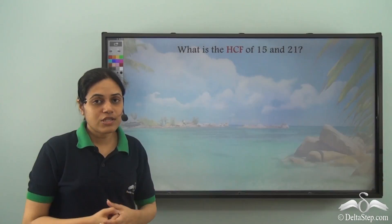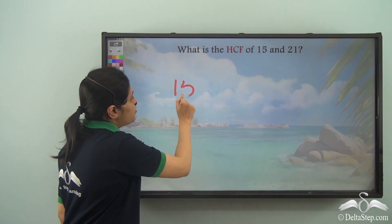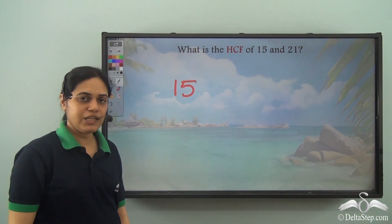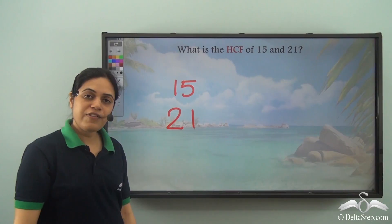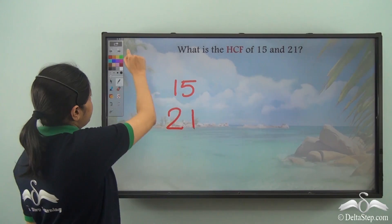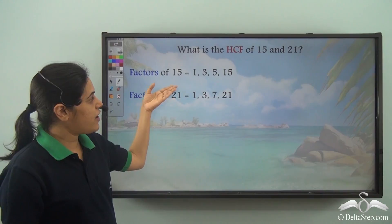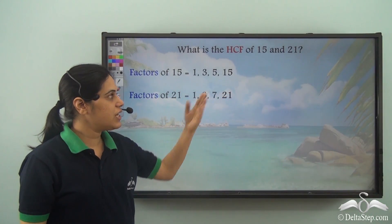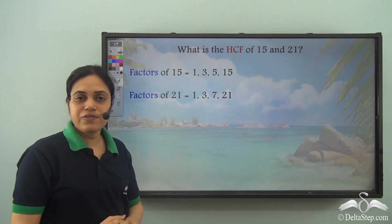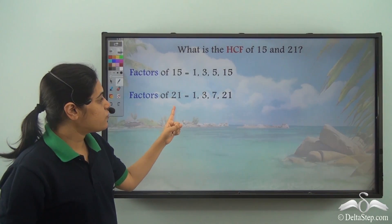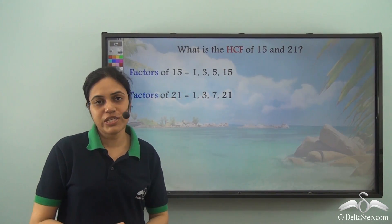The first step is to write all the factors of 15 and all the factors of 21. The factors of 15 are 1, 3, 5, and 15. The factors of 21 are 1, 3, 7, and 21.